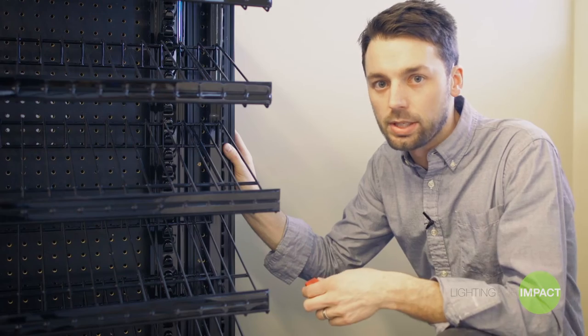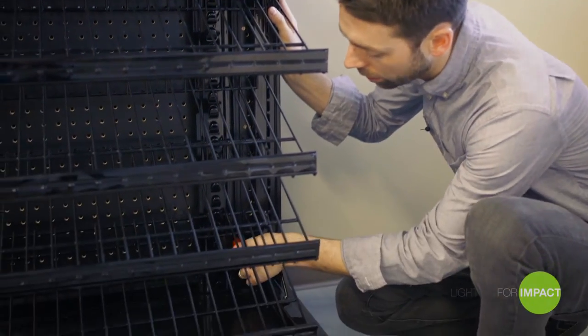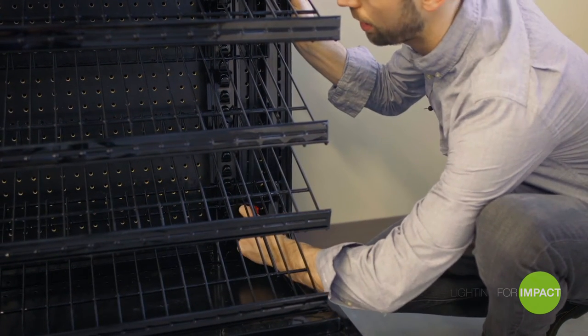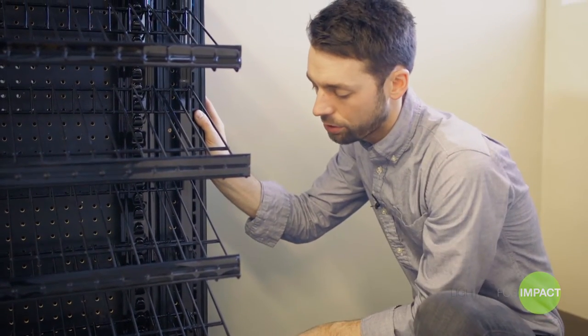Now that the power strip is installed, the next step is to install the red power input connector. Take your connector, press it into the power strip, rotate clockwise to snap into place. Next slide it all the way down to the bottom of the power strip.